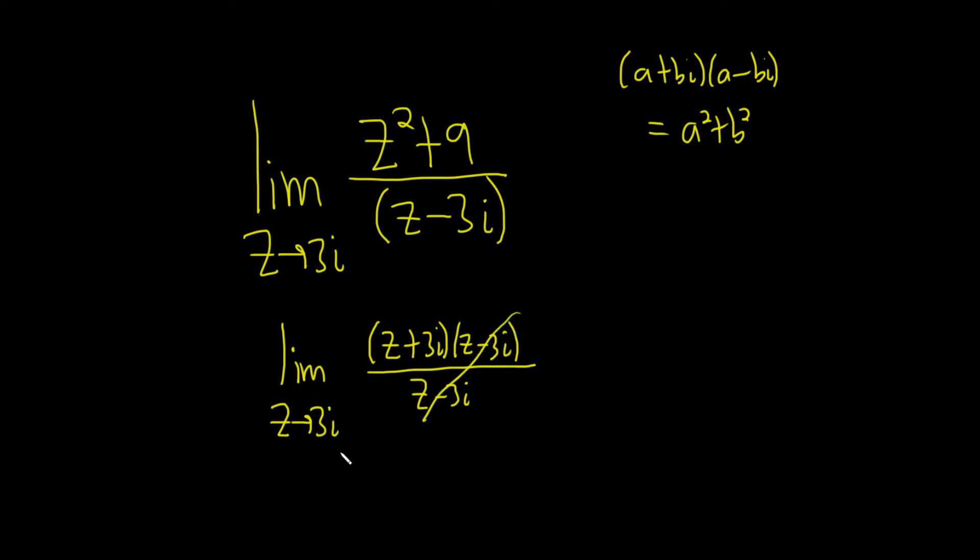These cancel, so this is equal to the limit as z approaches 3i of z plus 3i. And so now we've reached a place where we can actually plug in the number 3i. So when we do that, we drop the limit notation. We just get 3i plus 3i, which is equal to 6i. And that would be the value of the limit.